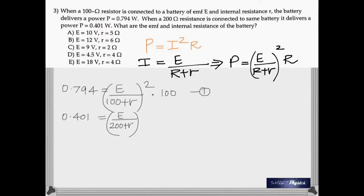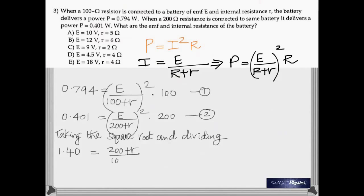You can substitute the two cases, which will give you two equations. And then taking the square root and dividing. So, you take the square root of everything that eliminates the square here. And then when you divide, you get this.